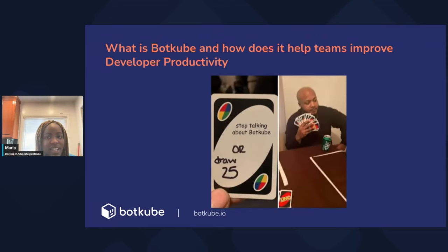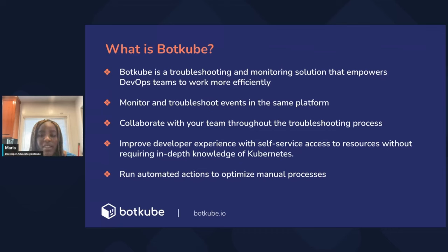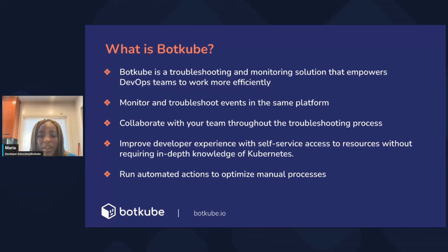What is Botkube and how does it help teams improve developer productivity? Botkube is a Kubernetes troubleshooting and monitoring tool that allows developer teams to work more efficiently. It does this by allowing you to receive and act on events in the same communication platform — you can use Botkube in Slack, Microsoft Teams, Discord, and Mattermost — giving insight into your troubleshooting process without context switching, so you can collaborate with your team and give everybody the right context.